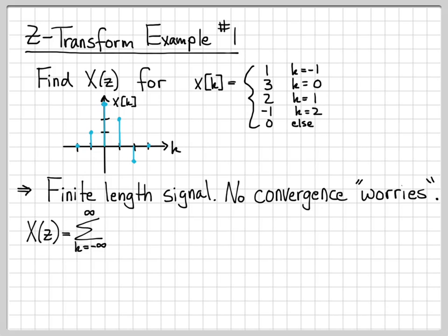So let's go ahead and compute the Z-transform. By definition, the Z-transform is the sum from K equals minus infinity to infinity of our signal times Z to the minus K. Well, for our particular signal here, almost all of the terms in this infinite sum are 0. The only terms that aren't 0 is at K equals negative 1, K equals 0, K equals 1, and K equals 2. So I can actually simplify my limits quite a bit from K equals minus 1 to 2.